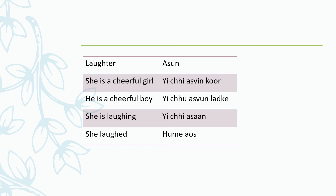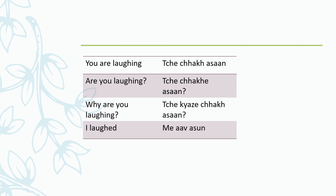For 'she is laughing': yic Asaan. 'She laughed': me Os, hui mein Os. 'You are laughing': suchak Asaan. 'Are you laughing?': suchak Asaan. 'Why are you laughing?': suchak Asaan. 'I laughed': me Os, me av Asun.